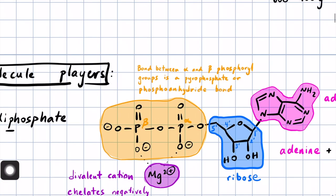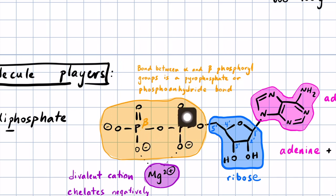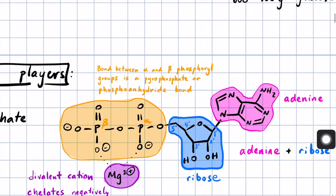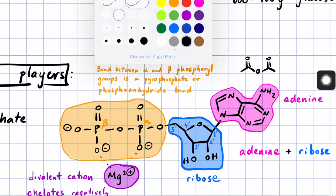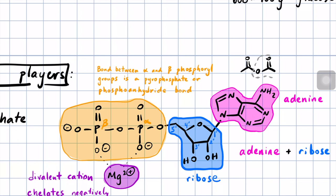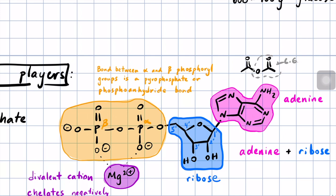The alpha phosphoryl group is bonded to the 5-prime hydroxyl of ribose, and then the alpha phosphoryl group is bonded to the beta phosphoryl group via what we call a phosphorus-oxygen-phosphorus connection — a pyrophosphate or phosphoanhydride bond. You can think of that bond as analogous to a carbon anhydride: a carbon double-bonded to oxygen, with maybe an acetyl group here, an oxygen, and another acetyl group. The anhydride bond is reactive because the leaving group is resonance stabilized — a nucleophile can come in and attack the carbonyl carbon and the leaving group leaves. Phosphoanhydrides are similar.